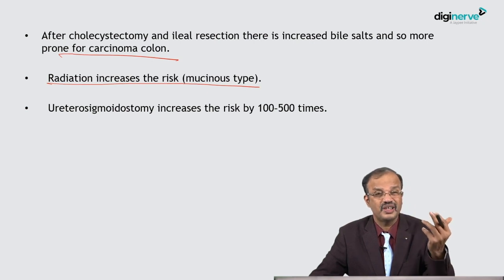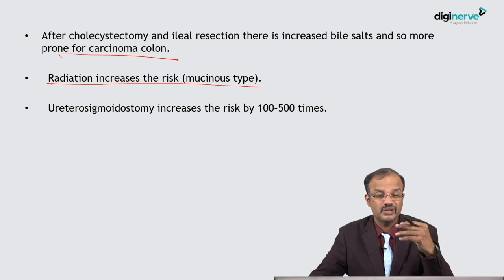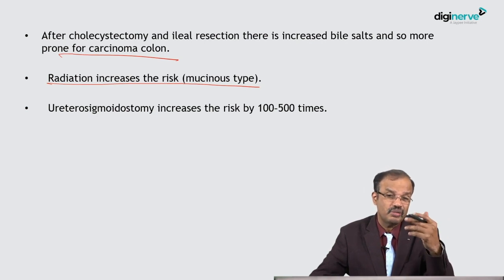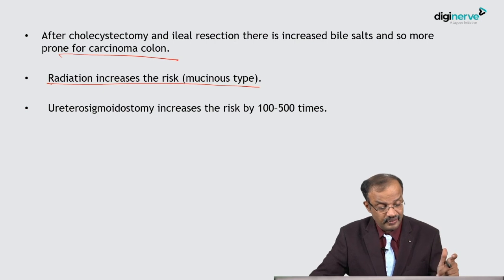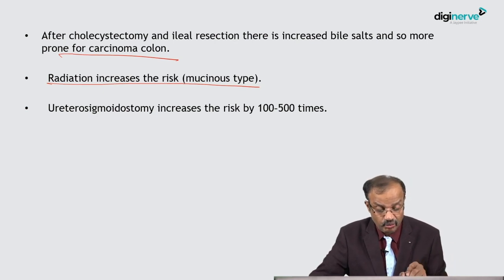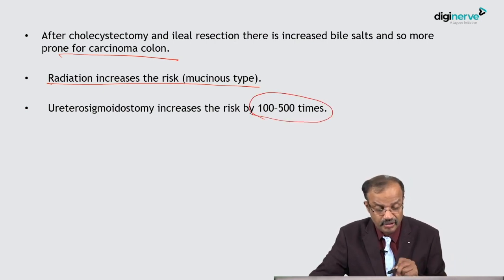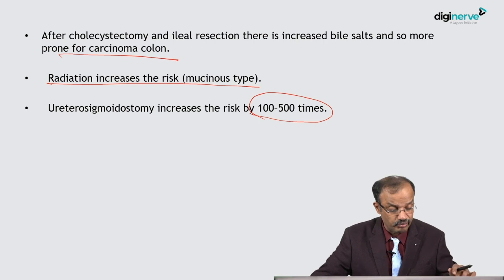Ureterosigmoidostomy done for other reasons can alter the pH of the colonic mucosa, which is very irritating and causes a high chance of malignancy at the junction — usually at the stoma site. This increases the risk by 100 to 500 times. Acromegaly may also increase the risk.